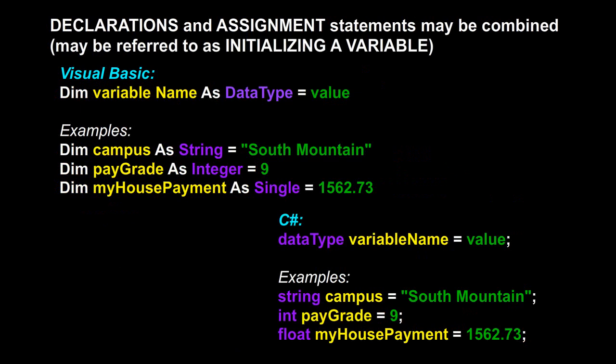We can combine the declaration statement and the assignment statement into one statement. In Visual Basic, it's: DIM, variable name, as data type, equals some value. This is sometimes referred to as initializing a variable — declaring it and immediately putting a default value in. On the C# side, it's the data type, the variable name, equals, the initial value, and a semicolon.